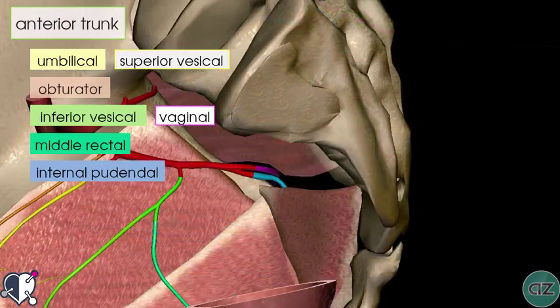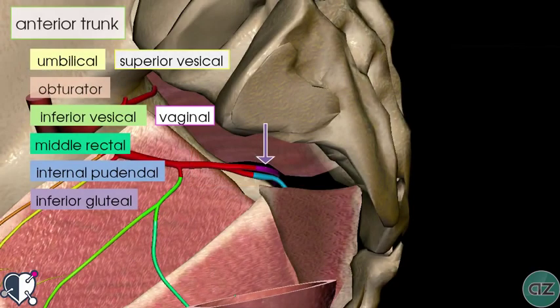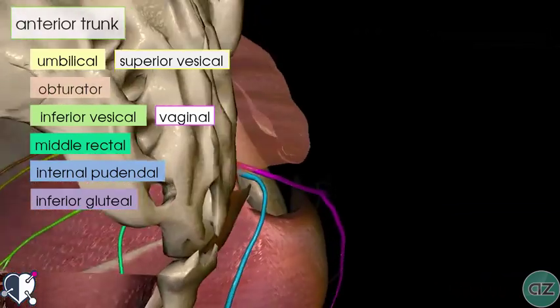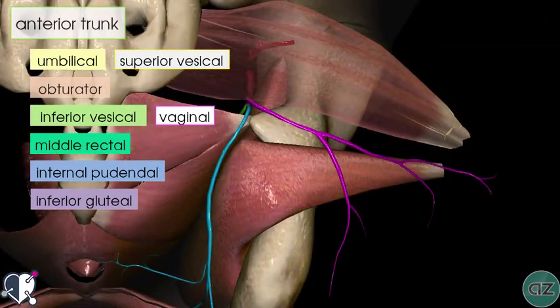The final branch shown in purple is the inferior gluteal artery. In this model, it comes off a common trunk with the internal pudendal artery — sometimes seen as an anatomical variant. The inferior gluteal artery exits via the greater sciatic foramen, passing between the piriformis and the ischiococcygeus muscle, running deep to the gluteus maximus muscle to supply the gluteal region.